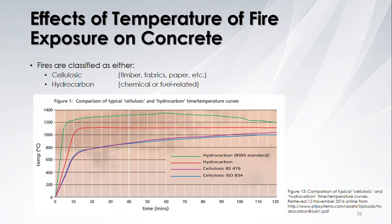The effects of temperature of fire exposure on concrete: Fires are classified as either cellulosic, which include timber, fabrics, and paper, or hydrocarbon, which are chemical or fuel related. As seen in the figure below, hydrocarbons can reach high temperatures at a much quicker rate than cellulosic fires. A hydrocarbon fire can reach a temperature of 900 degrees Celsius in 8 minutes, whereas a cellulosic fire would take 60 minutes to reach that same level.